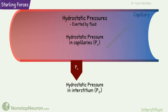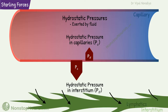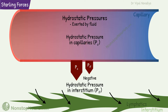Now, the hydrostatic pressure in the interstitium. As you might have already guessed, positive hydrostatic pressure in the interstitium tends to move fluid back into the capillaries. However, due to fluid removal by lymphatics, it is in fact negative in loose tissues like lung and subcutaneous tissues. Being negative, it pulls fluid out of the capillary. It is about minus 3 mmHg.